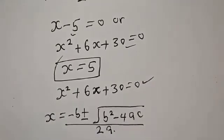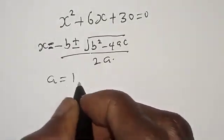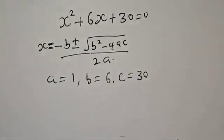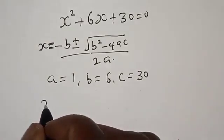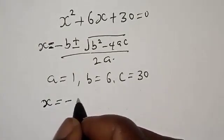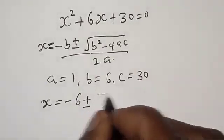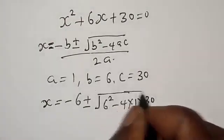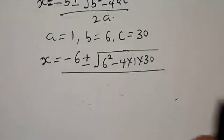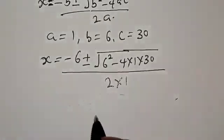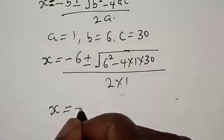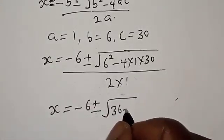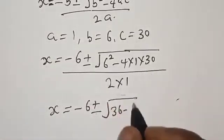Using the quadratic formula s equals negative b plus or minus square root of b squared minus 4AC over 2A. From this equation, A is equal to 1, B is equal to 6, C is equal to 30. Then we have s is equal to minus 6 plus or minus square root of 6 squared minus 4 times 1 times 30, over 2 times 1. That gives us 36 minus 120.